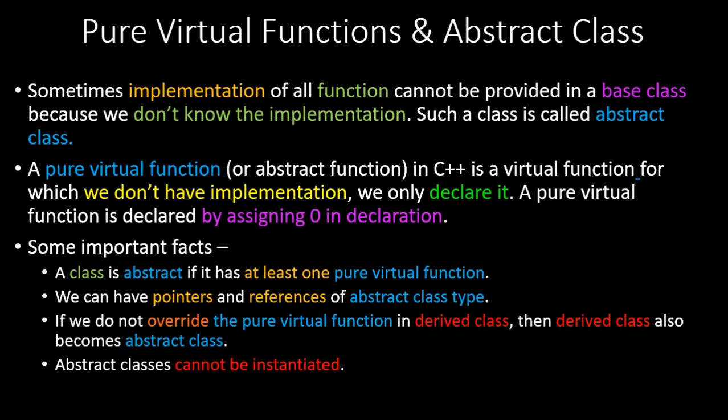Now let's look at pure virtual functions and abstract classes. Sometimes implementation of all functions cannot be provided in a base class because you don't know the implementation — such a class is called an abstract class. For example, if you have a base class 'shape' with derived classes like circle and rectangle, and you want a 'calculate area' function, in the base class you don't know the implementation because you don't know the exact shape. That function can be a pure virtual function.